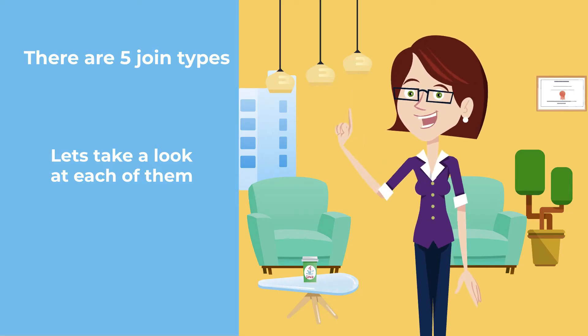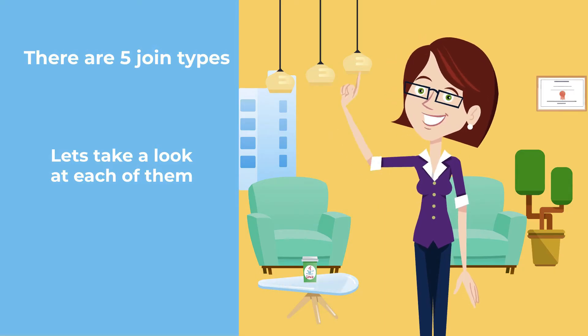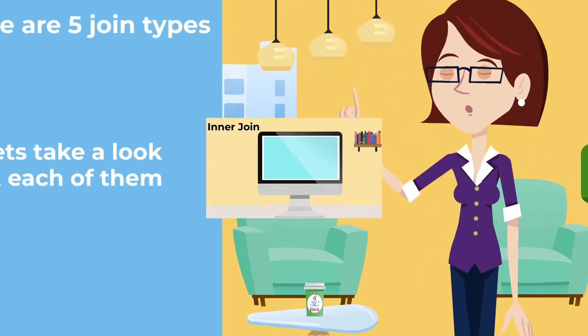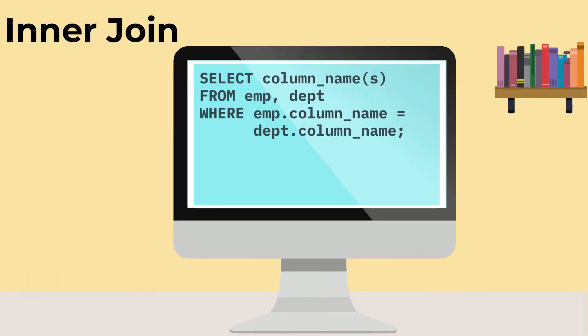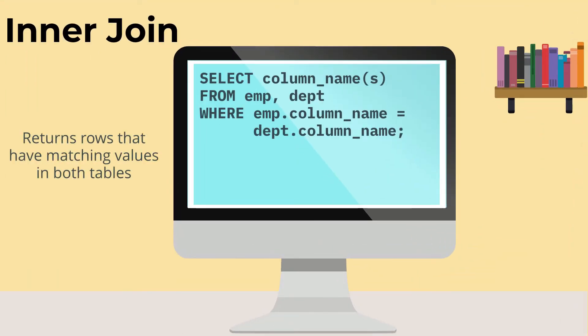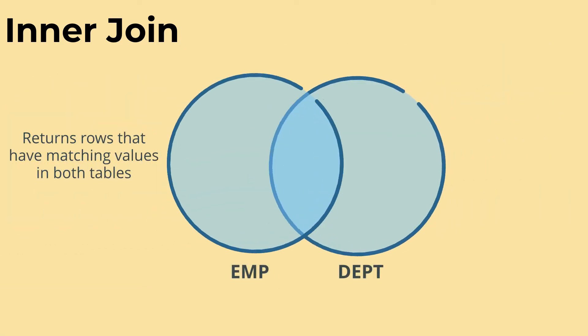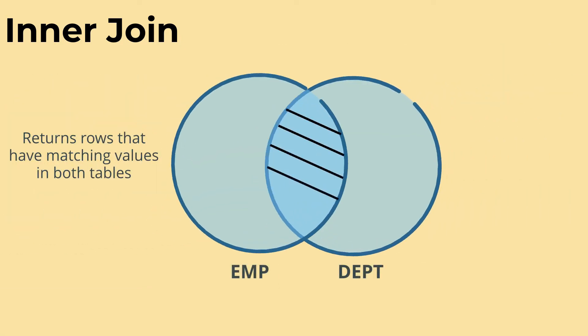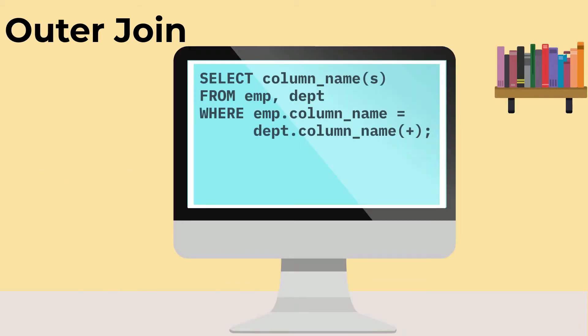Along with those three join methods, we have five join types. Your traditional query uses an inner join, one where we only return the rows where there's an actual join between the two tables — the most common type of join you get in a query.